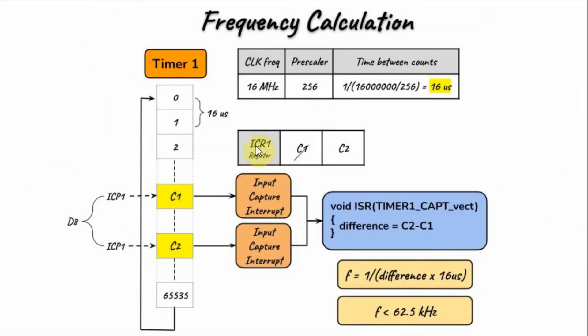The C++ program used in this project takes multiple capture values within the counting of Timer 1 and then finds the average and uses the average to compute the frequency. This technique would improve the accuracy of the calculation.